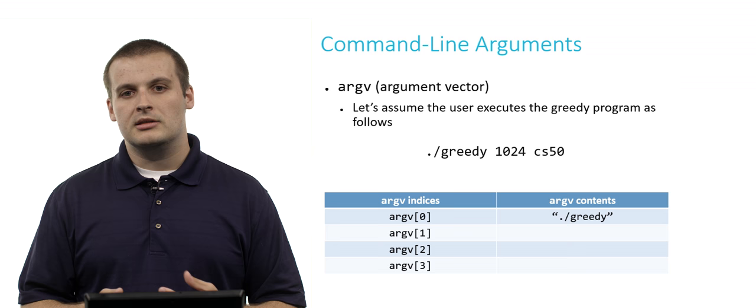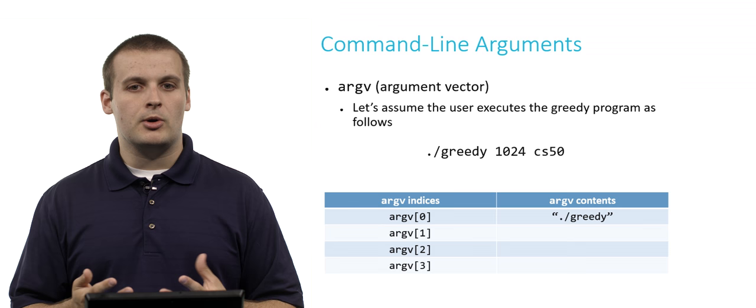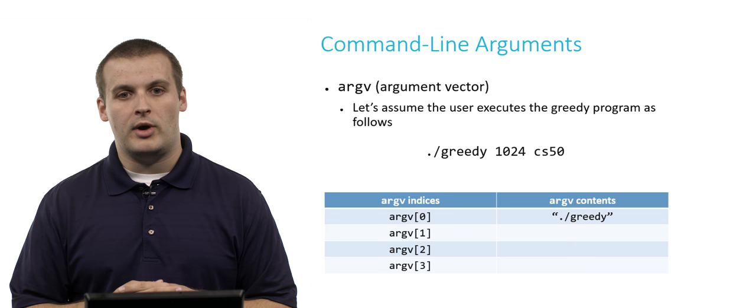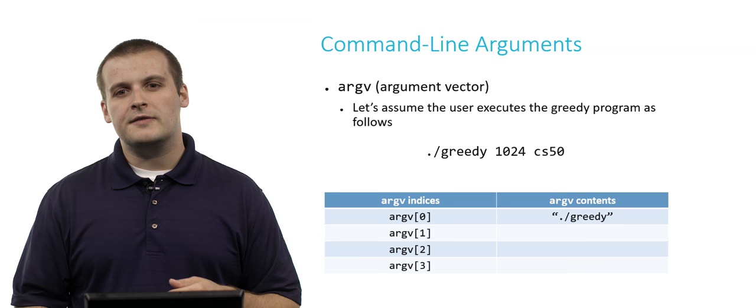So let's assume the user executes the greedy program as follows. If they type at the command line ./greedy space 1024 space CS50. And for whatever reason, we've already prepared our greedy program to know and work with these command line arguments. We didn't previously when we worked on it for the greedy problem. But let's say we've now modified it so that we do process the command line arguments in some way. In this case, argv 0 is ./greedy.